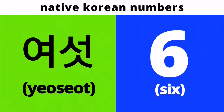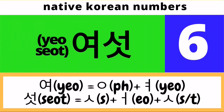Next, the native Korean version of number six is Yo sot. This is composed of two syllables — the first syllable is Yo, the second syllable is Sot. Pronounce it with me: Yo sot. To spell Yo sot in Hangul, for the syllable Yo we need a placeholder Ieung followed by a Yo character. For the second syllable Sot, we need to draw a Siot character followed by an O character followed by another Siot character.